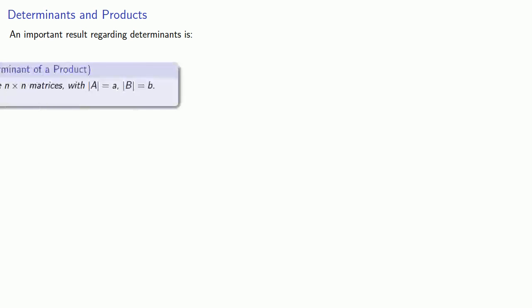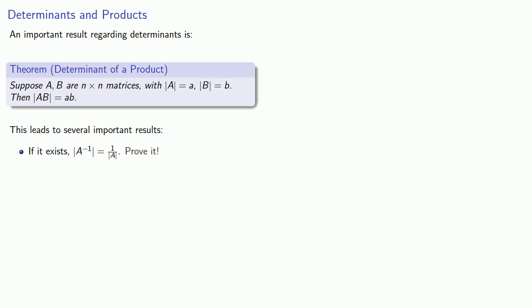The fact that the determinant is independent of which row or column we use is one useful result. Here's another important theorem: suppose A and B are n by n matrices with det A = a and det B = b. Then the determinant of the product equals the product of the determinants. This leads to further results: if it exists, the determinant of the inverse of A equals 1 over det A — something you should be able to prove. Conversely, if the determinant of A is 0, then A inverse does not exist.